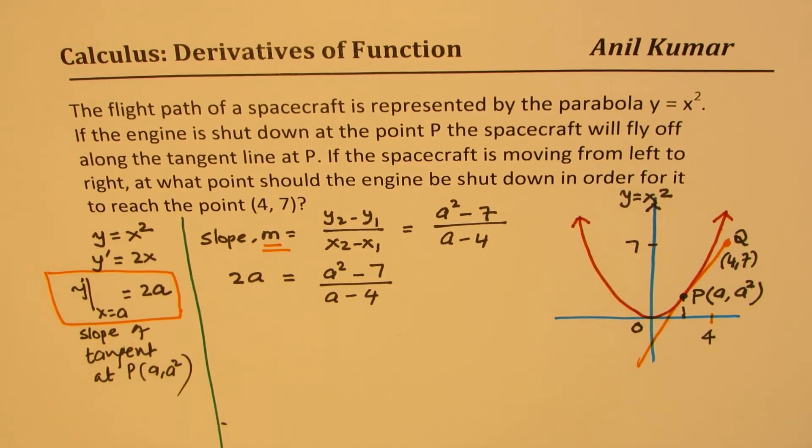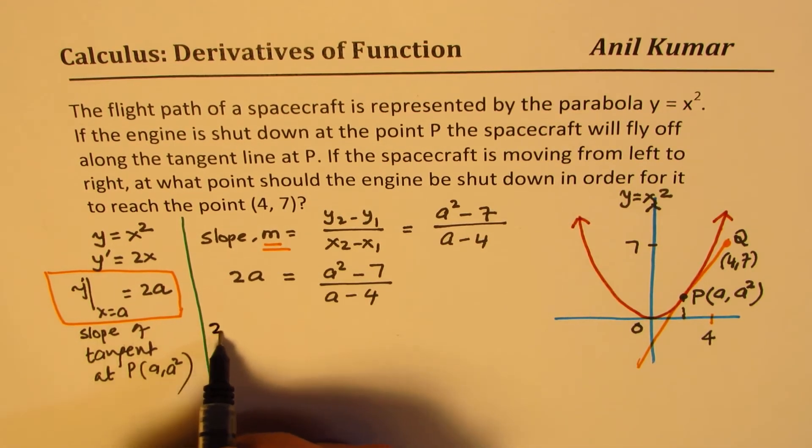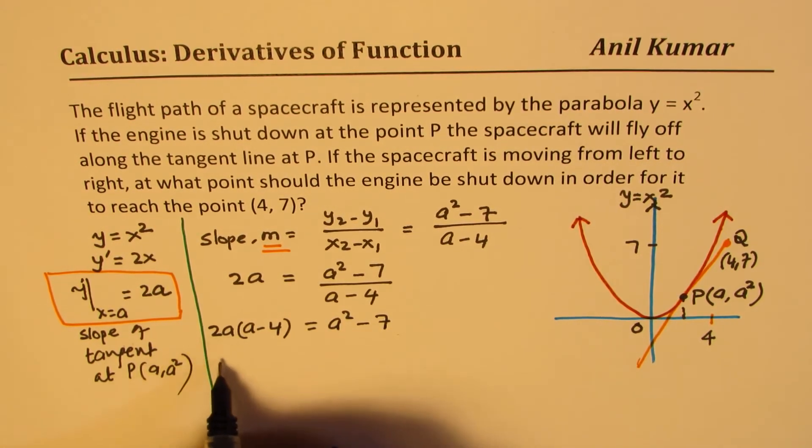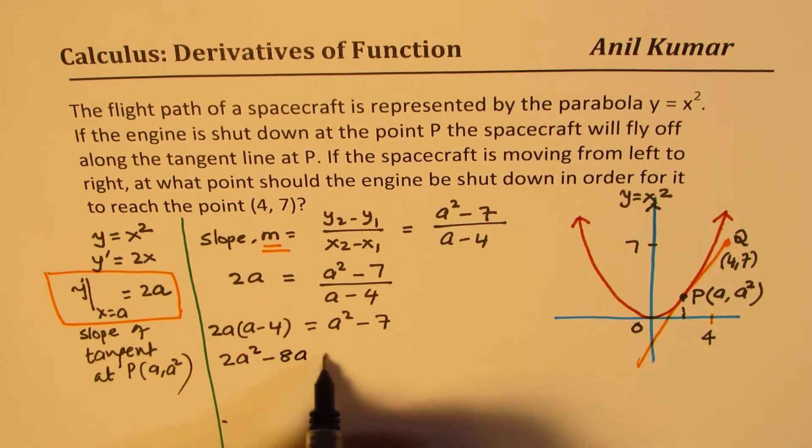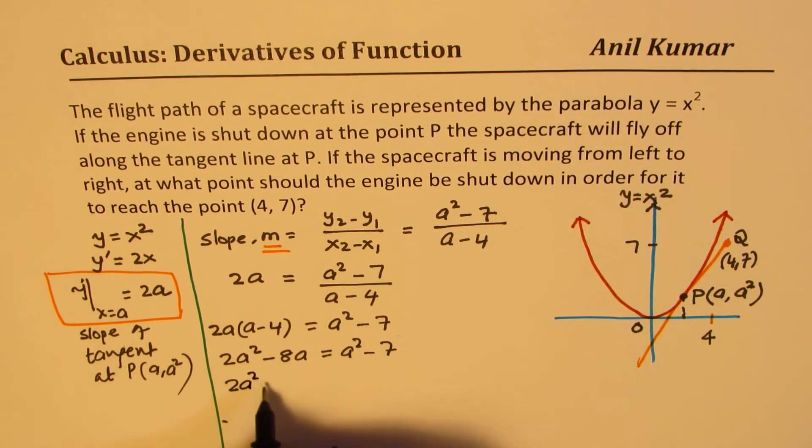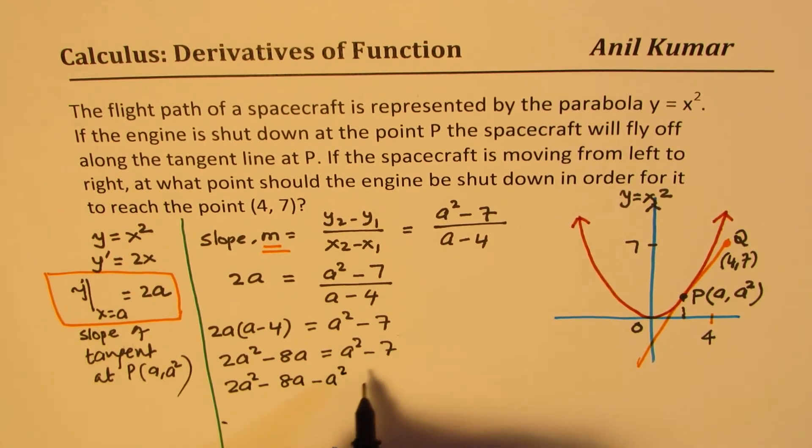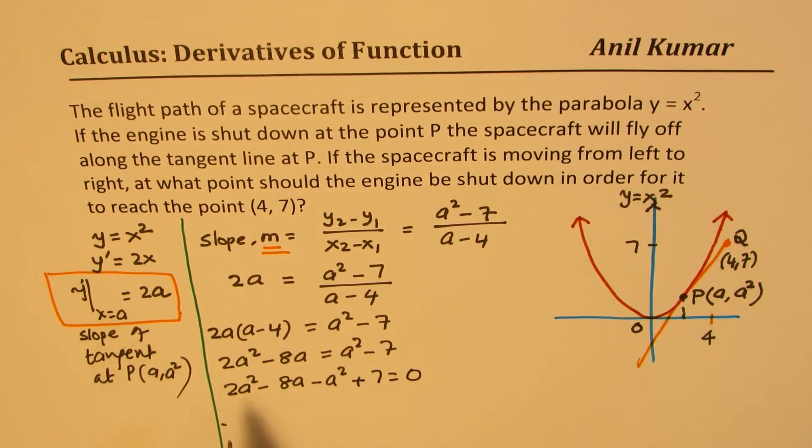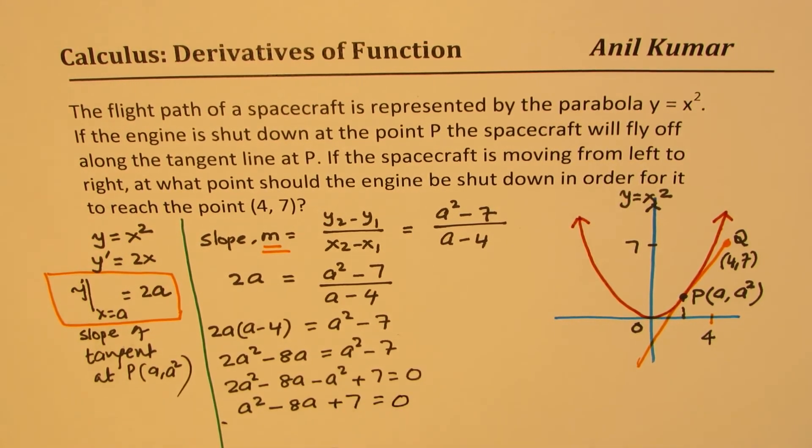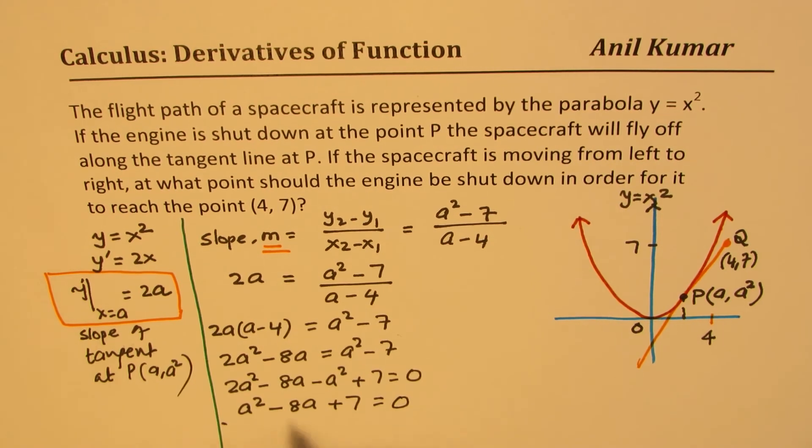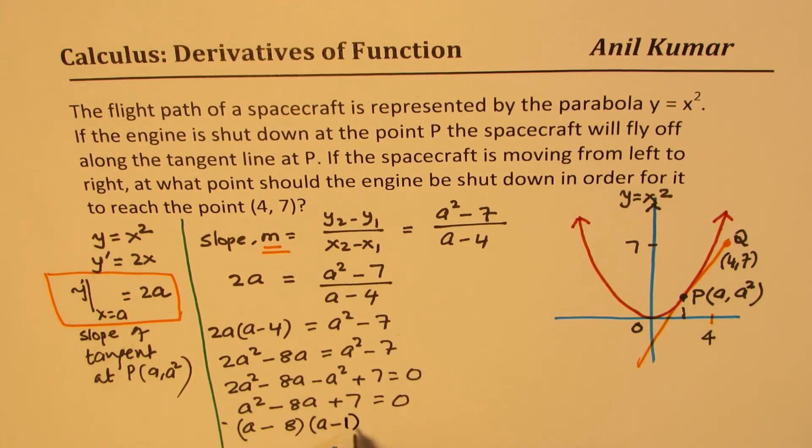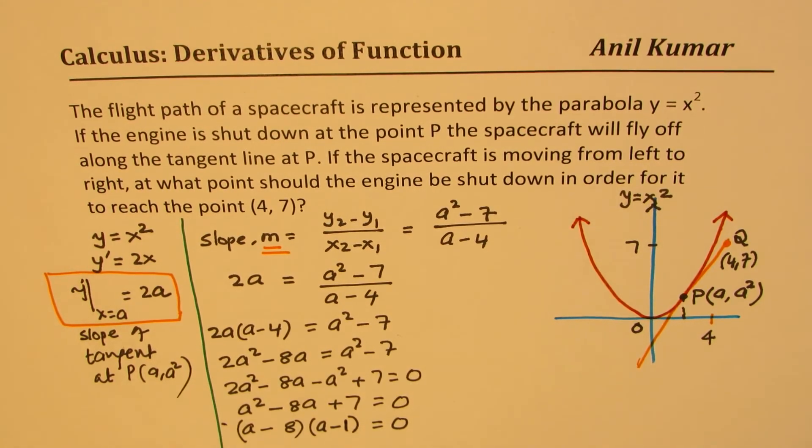Perfect. Now, we have only one variable. We can cross multiply. So we get 2a times (a minus 4) equals a squared minus 7. So we get 2a squared minus 8a equals a squared minus 7. Now, bringing it to the left, we get 2a squared minus 8a minus a squared plus 7 equals 0, which gives a squared minus 8a plus 7 equals 0. So we could factor this as (a minus 7) times (a minus 1) equals 0. So we get 2 possible solutions for a.